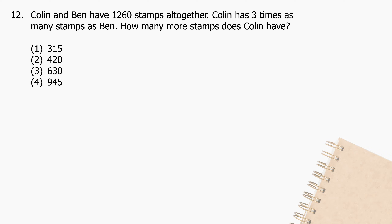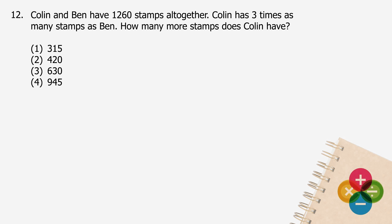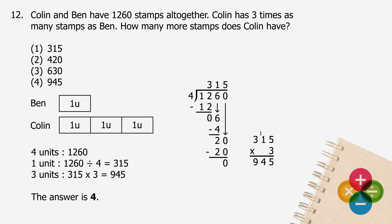Question 12: Colin and Ben have 1,260 stamps altogether. Colin has 3 times as many stamps as Ben. How many more stamps does Colin have? Let the amount of stamps Ben has equal 1 unit, so 4 units equals 1,260. One unit is 1,260 divided by 4, which is 315. Three units is 315 multiplied by 3, which is 945. The answer is 4.